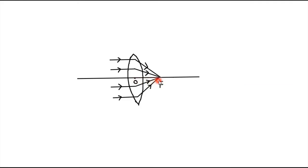In this experiment the focal length is approximately equal to 20 centimeters. This experiment shows how the convex lens converges all the rays at focus, and the bright spot — the image of the sun — can be seen at focus. That is why the carbon paper starts burning at this point, because all the heat rays are trapped at this point of focus.